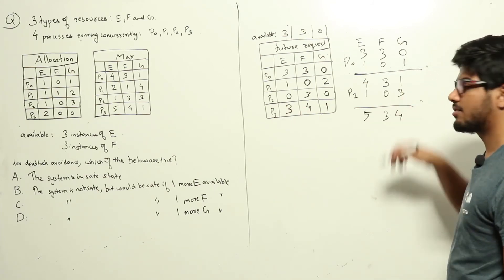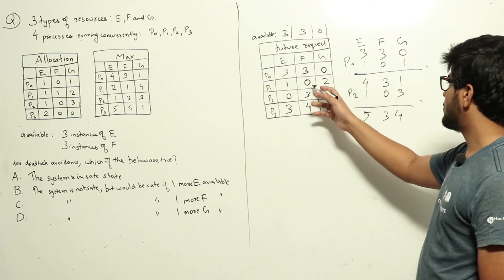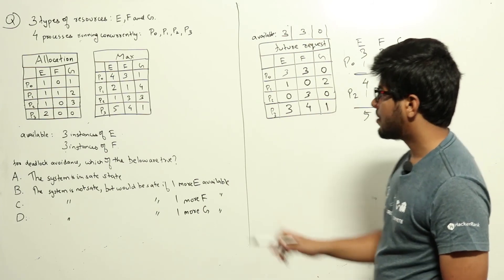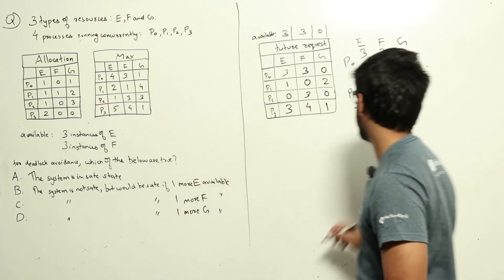After P2 runs and releases its resources, we will have five, three, and four resources of each type. Now P1 can be easily satisfied. Let us assign resources to P1. After P1 runs, it will release one, one, and two respectively.